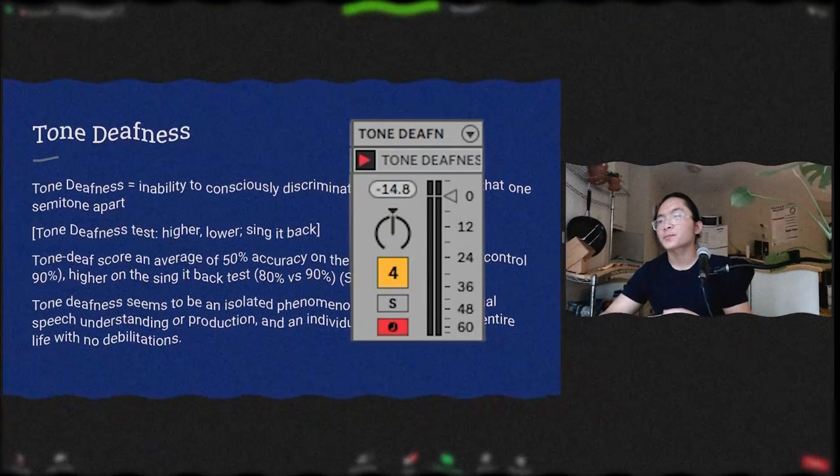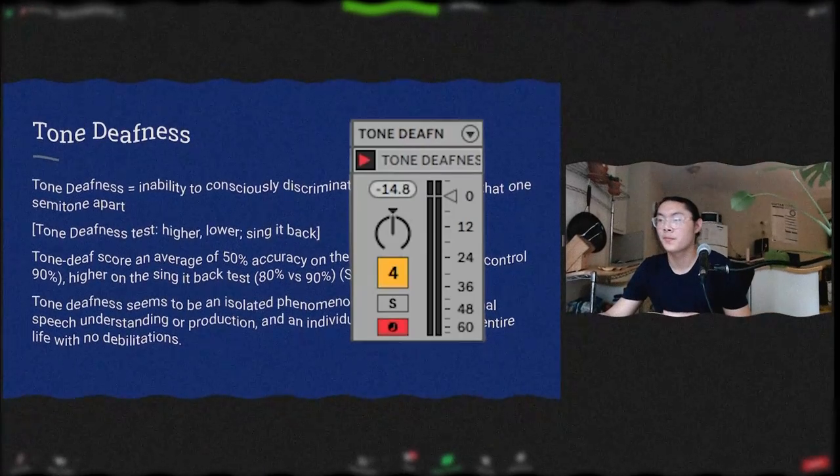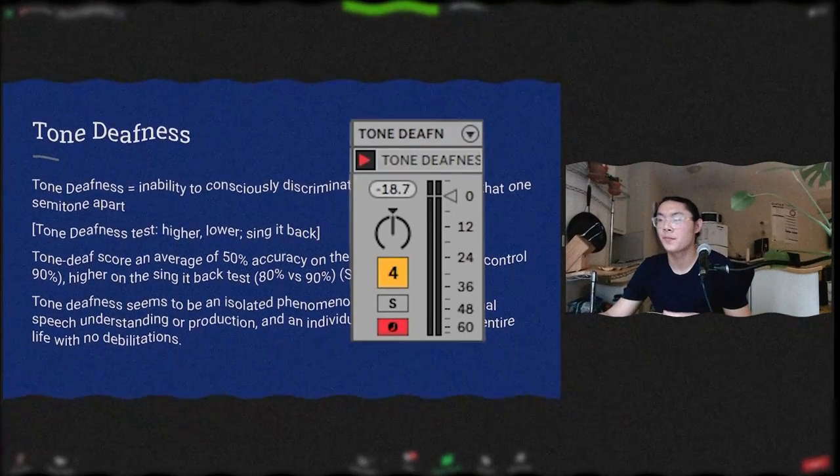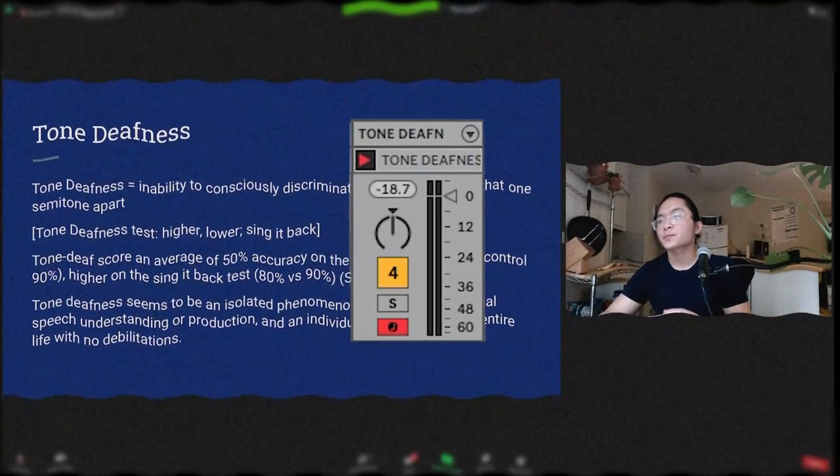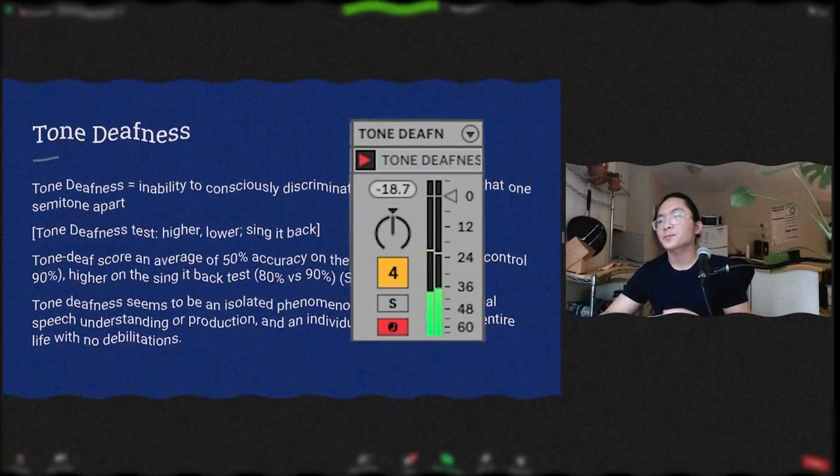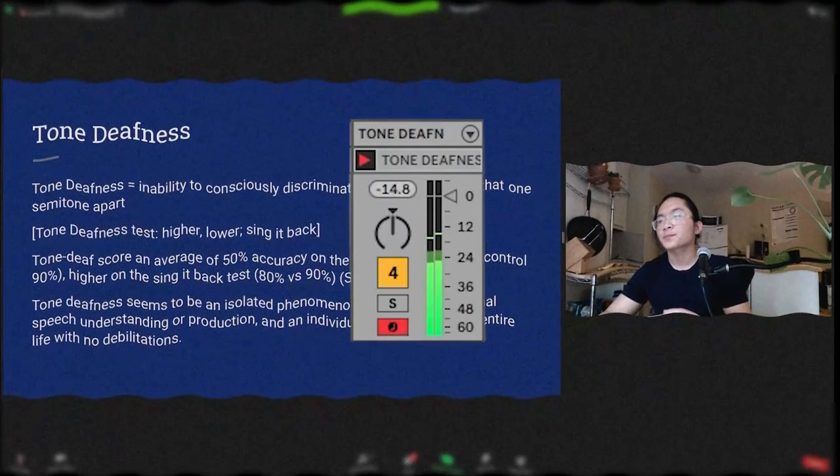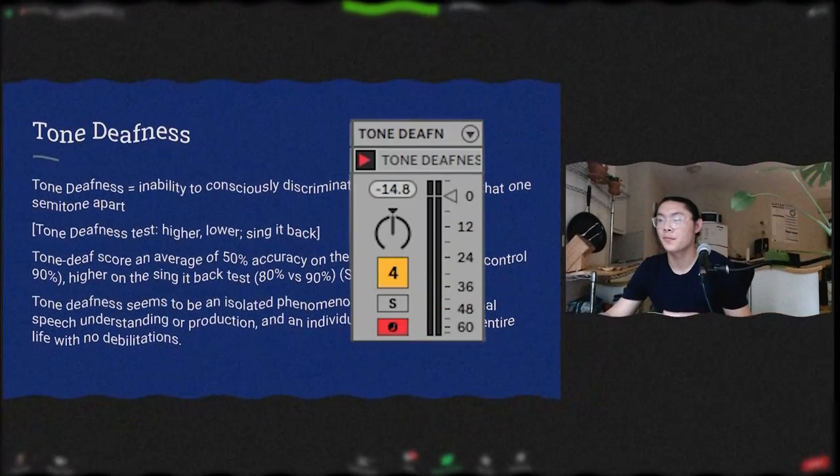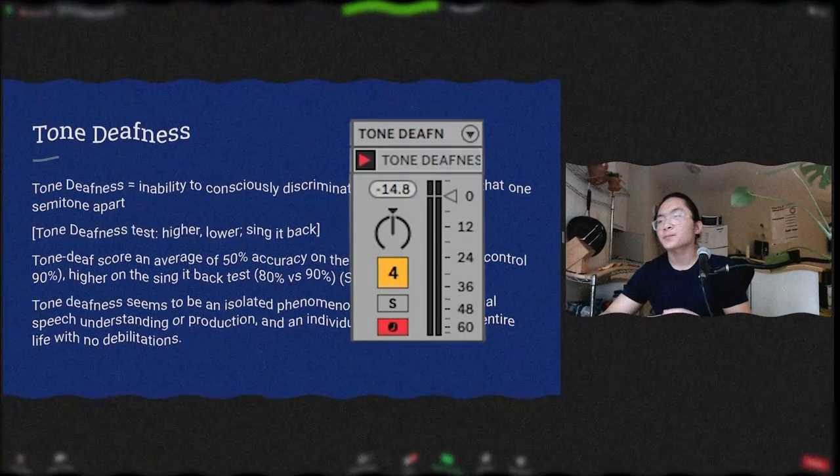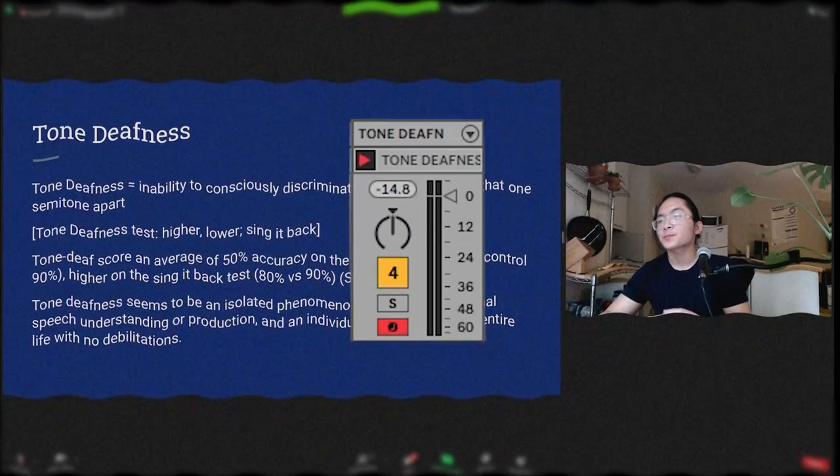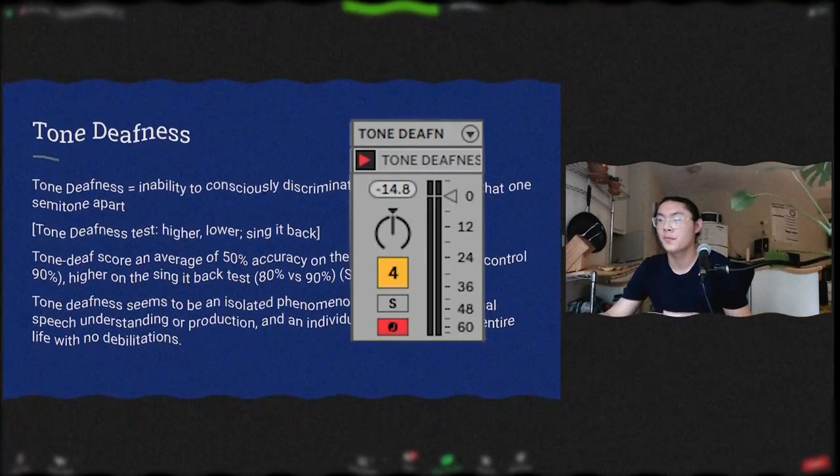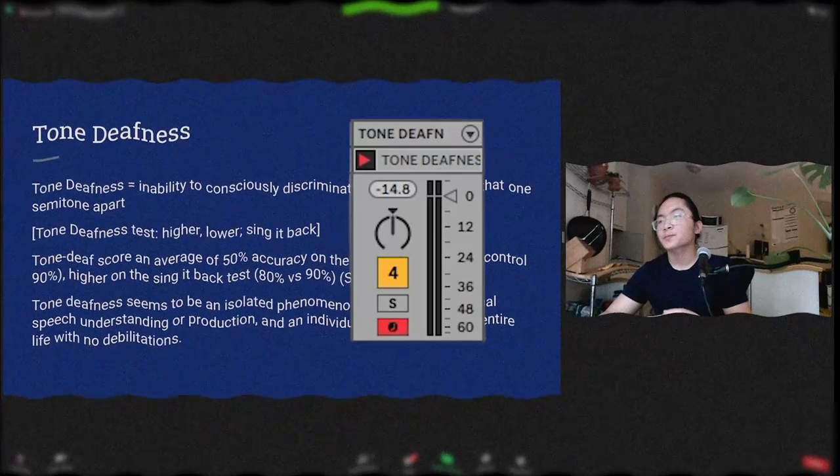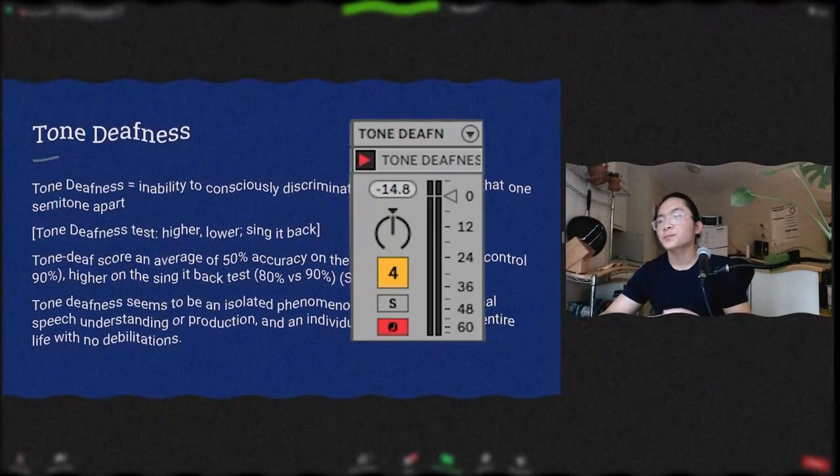The tone deafness test has two parts: the higher-lower portion and the sing it back portion. I'm going to play you two notes and you let me know which note is higher. Here's the first set: first note, second note. Here's the second set: first note, second note. The right answer is that for the first set the second note was higher, and for the second set the first note was higher. If you had trouble with this, couldn't figure it out, you may have tone deafness. The second part of the tone deafness test is the sing it back portion. I'm going to play the first set again, and this time instead of telling me which one's higher and lower, just sing it back to me.